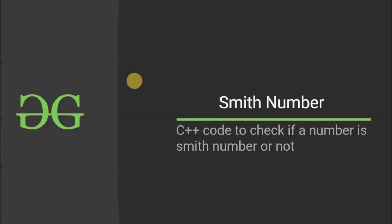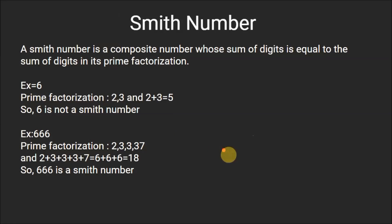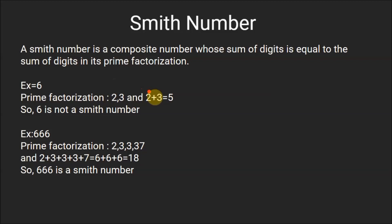Hello everyone, welcome to GeeksForGeeks. In this video we are going to see what is the Smith number and the C++ code to check if a number is a Smith number or not. A Smith number is a composite number whose sum of digits is equal to the sum of digits in its prime factorization. If the number is 6, its prime factorization is 2 and 3, and the sum is 2 plus 3 which equals 5. Since this sum is not equal to the sum of digits of the original number, 6 is not a Smith number.